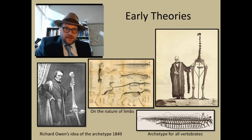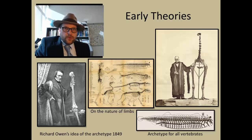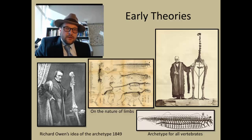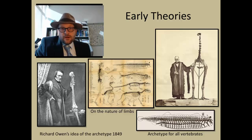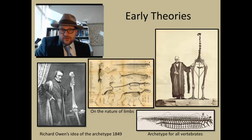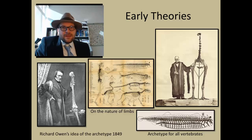Prior to the early 1800s, most scientists viewed organisms as unchanging and always present on the planet. Extinction was not viewed as possible, and most scientists viewed life as static. The fossil record was pretty poor. However, in the early 1800s with the industrial revolution, new fossils were being discovered from coal mines, and the exploration of the world was starting to fill the first natural history museums with strange natural history objects like fossils.